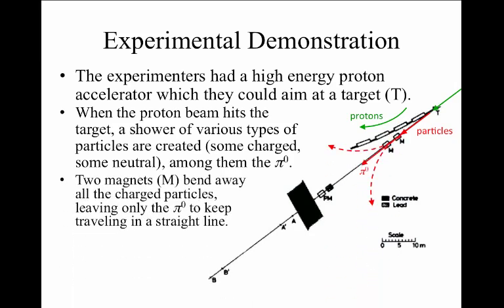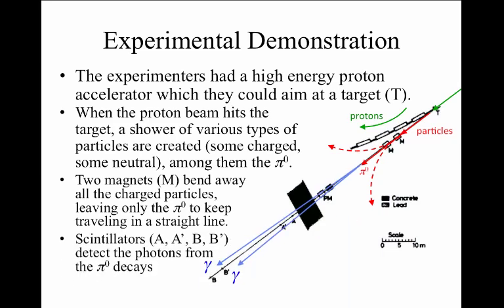Two magnets were located downstream of the target, and the magnets could be used to steer away particles of electric charge. Those that are electrically neutral would keep traveling in a straight line, like the π0. When the π0 eventually decayed to two photons, these photons would keep traveling in a straight line as well, and eventually would be detected by scintillator counters located at A and A', B and B'. Notice the scale of this experiment, where 10 meters is actually a very small part of this experiment. So this experiment was hundreds of meters long.